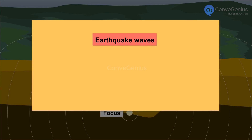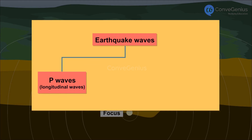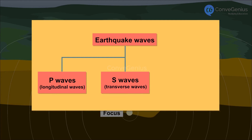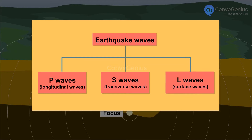There are three kinds of earthquake waves: P waves or longitudinal waves, S waves or transverse waves, and L or surface waves.